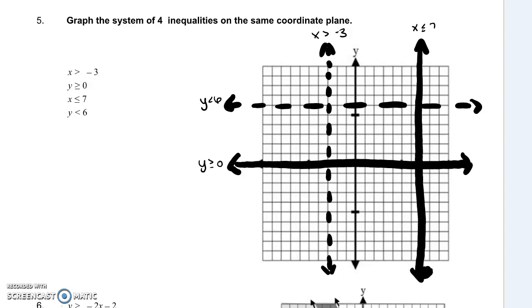All right, ladies and gentlemen, here's what our lines should look like. We should have two vertical, two horizontal. Our x is greater than negative 3 should be dashed. x is less than or equal to 7 should be solid. y is less than 6 dashed. y is greater than or equal to 0 solid.